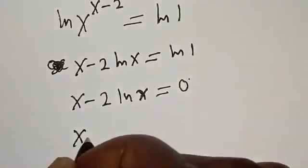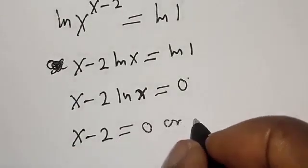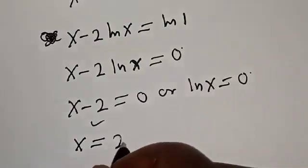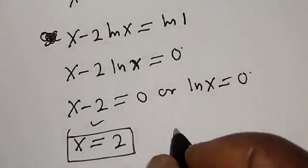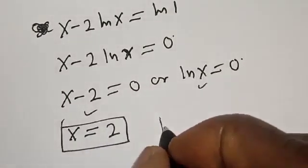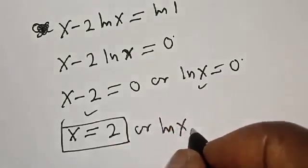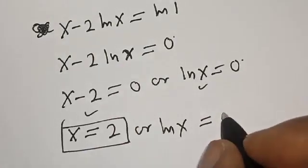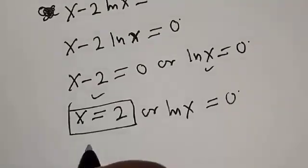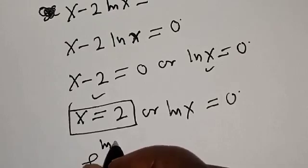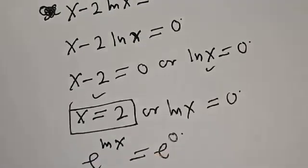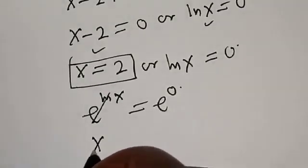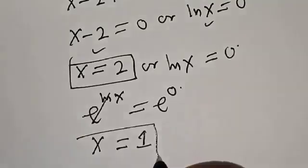Then we have two cases here: s minus two is equal to zero, or natural log of s is equal to zero. From the first case, s is equal to two. From the second case, natural log of s is equal to zero, so we raise e to both sides: e raised to power natural log of s equals e raised to power zero, giving s is equal to one.